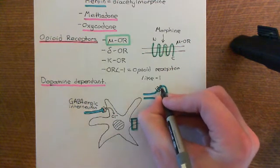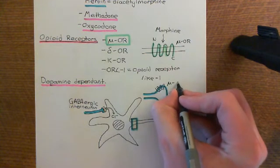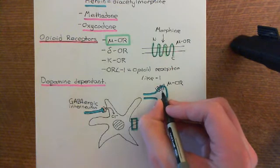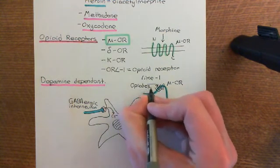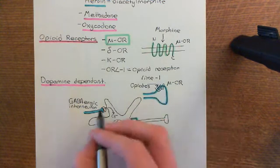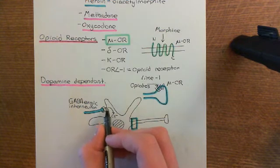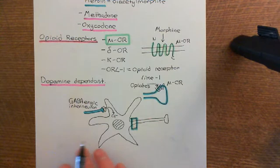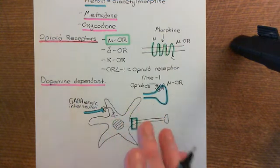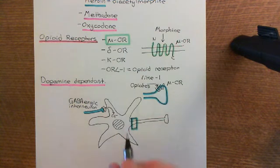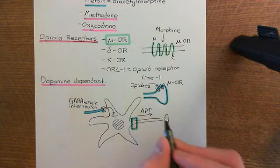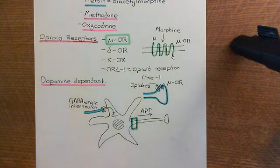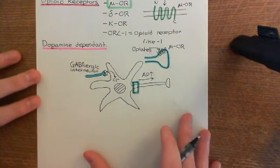The axon terminals of these GABAergic interneurons also have mu opioid receptors on them, and these do the exact same thing as the CB1 receptors. When our opiates bind to and activate the mu opioid receptor on the axon terminals of these GABAergic inhibitory interneurons, you get less GABA being released onto the dendritic spines of the dopaminergic neuron. You hugely dampen down the inhibitory input, the neuron becomes much more excitable, fires action potentials at a much higher rate, and releases much more dopamine into the nucleus accumbens and medial prefrontal cortex — driving addiction.